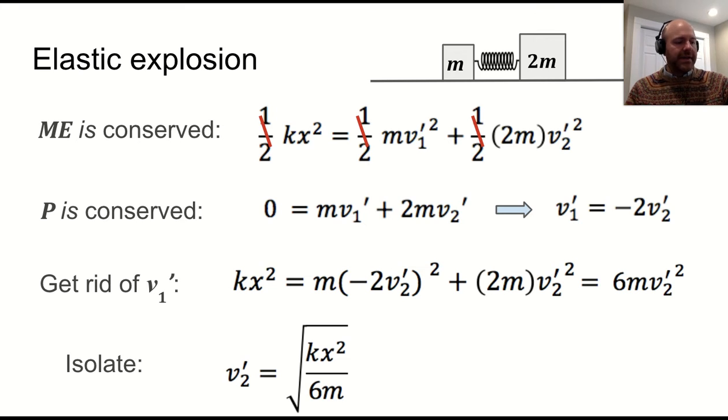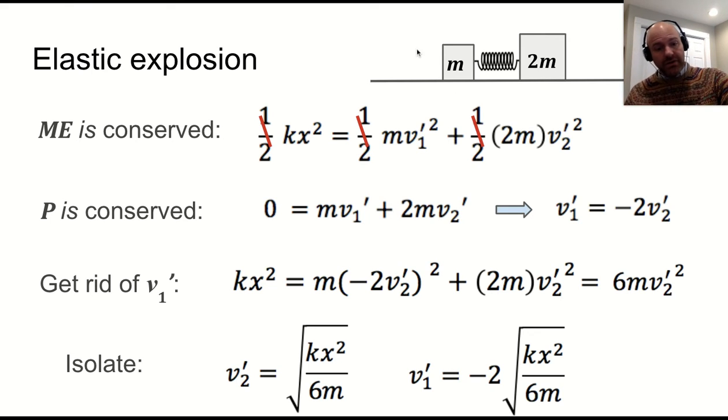And this is, again, not anything I would ever consider memorizing, because you don't really need to know this, but know that you could get there. But there is a way to solve this for each of the objects. One of them will be going positive, one of them will be going negative, one of them will be going faster than the other. Notice the one with half the mass is going twice as fast, and so on.